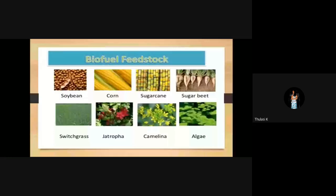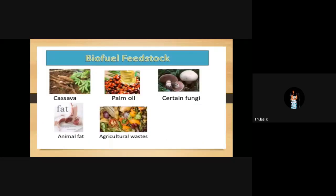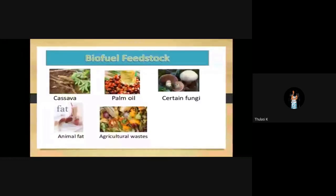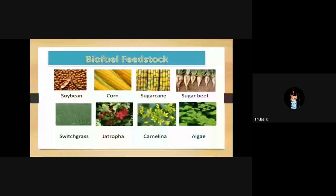What are the feedstocks of biofuels? Biofuel feedstocks are soya bean, corn, sugar cane, sugar beet, switchgrass, jatropha, camelina, algae, cassava, palm oil, certain fungi, animal fat and agricultural waste. The main feedstocks are jatropha, corn and soya bean. From sugar cane also, biofuels are extracted in India.